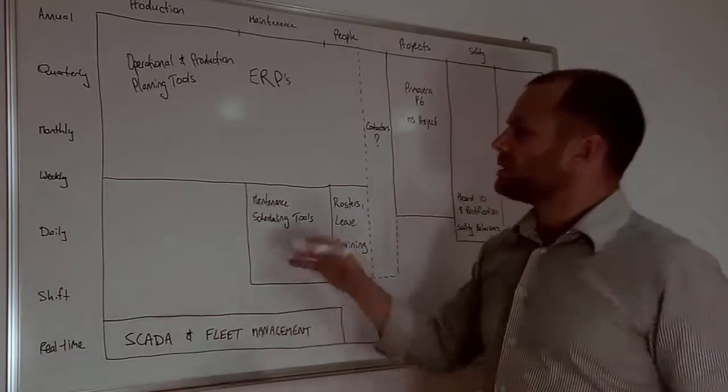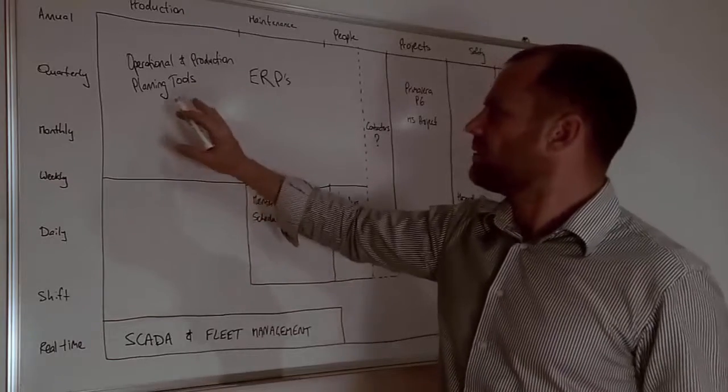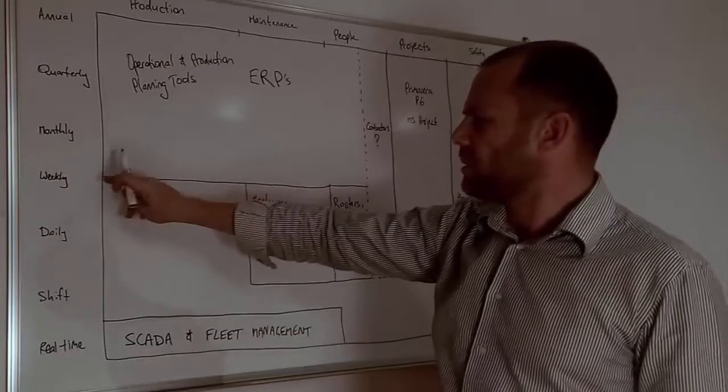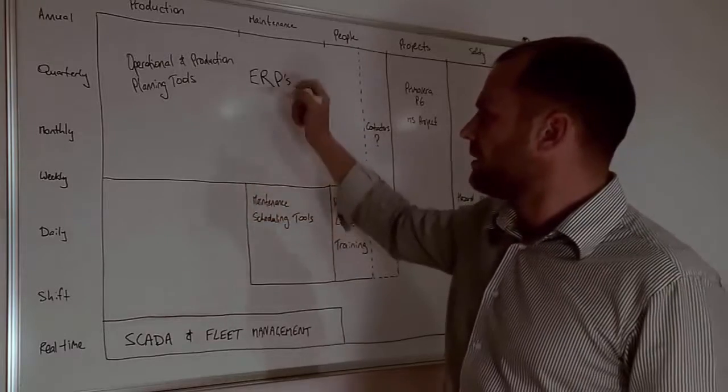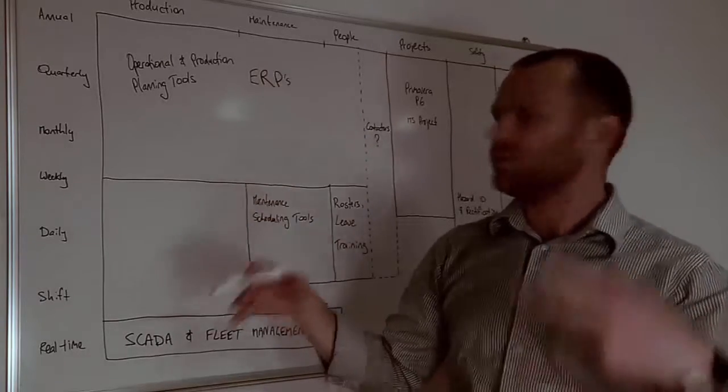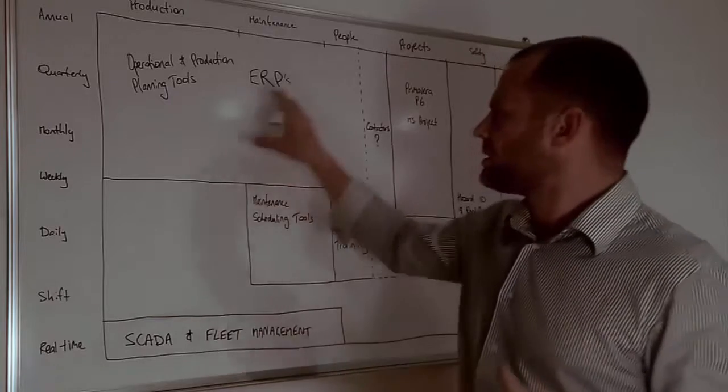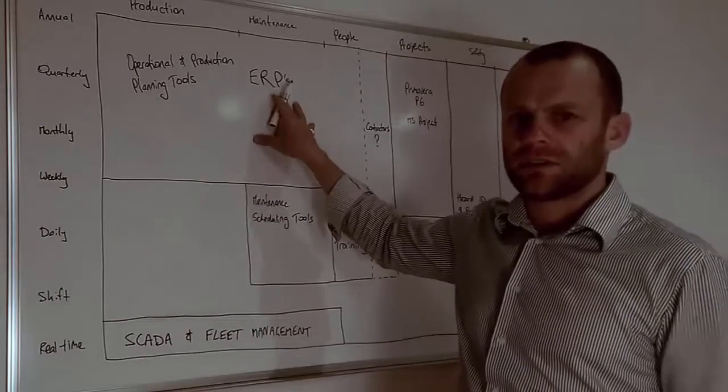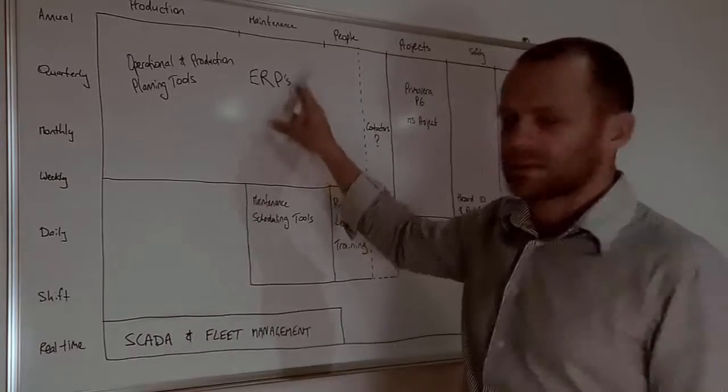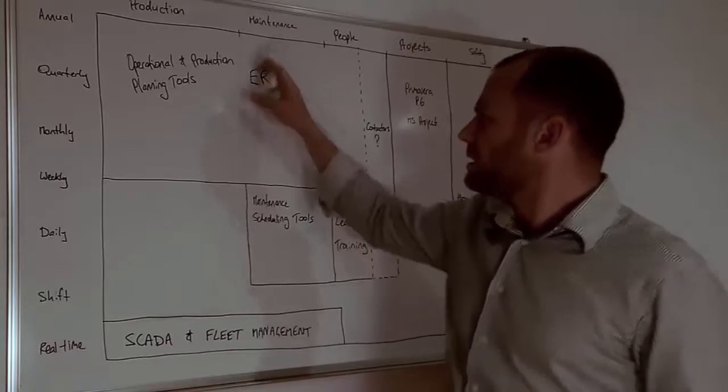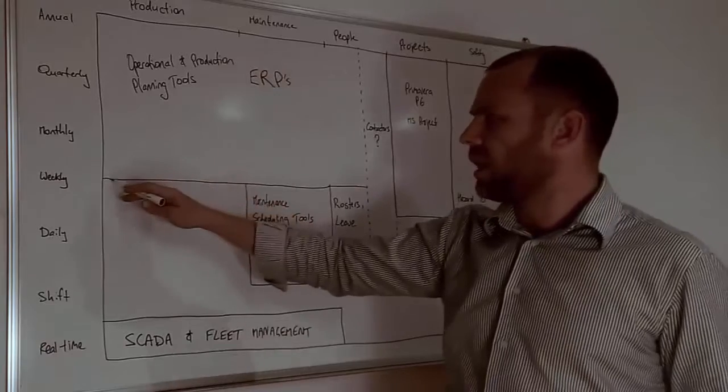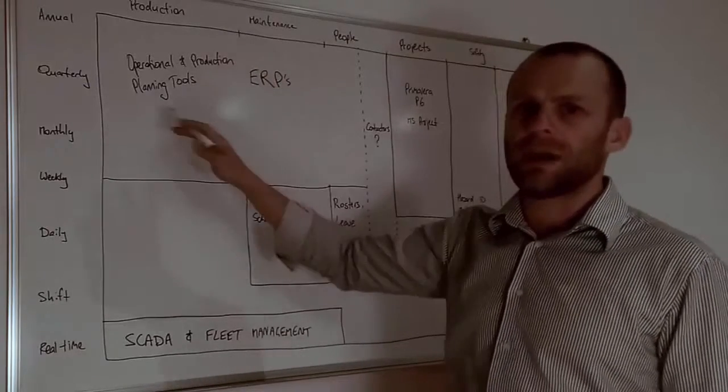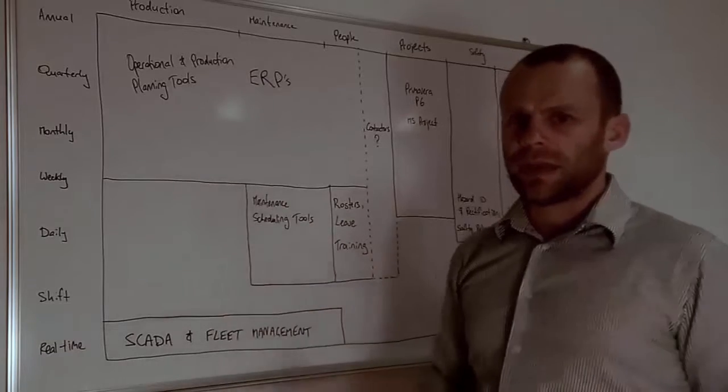So if we're just thinking production space, we tend to have in the annual, quarterly, monthly, down to about weekly level, we tend to have quite large operational production planning tools which may or may not connect in with your enterprise resource planning tools like an ERP, SAP, that kind of thing. But these things seldom go lower than the weekly level in granularity and they're used mainly for budgeting and long term planning of an operation.